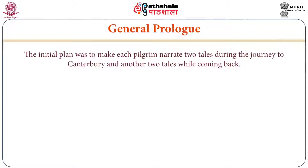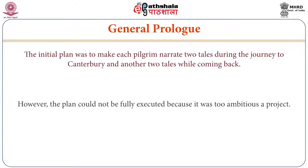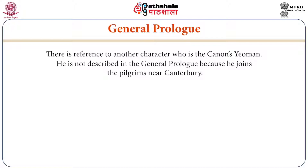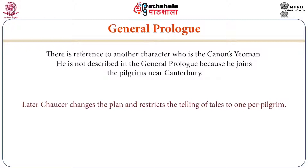The initial plan was to make each pilgrim narrate two tales during the journey to Canterbury and another two tales while coming back. However, the plan could not be fully executed because it was too ambitious a project. The General Prologue introduces twenty-six pilgrims, the five guildsmen being considered a group. Apart from them, the Second Nun, the Nun's Priest, the Host, and Chaucer himself also joined the pilgrimage. There is also reference to the Canon's Yeoman, who is not described in the General Prologue but joins the pilgrims near Canterbury later.